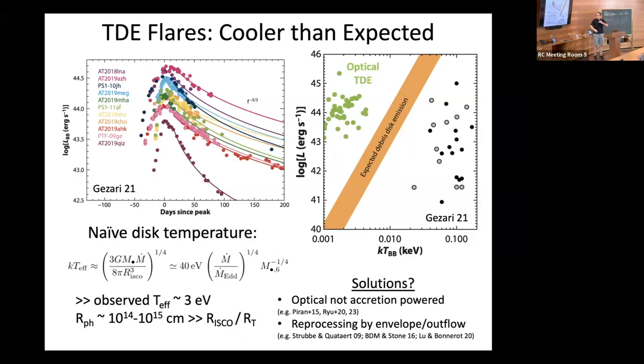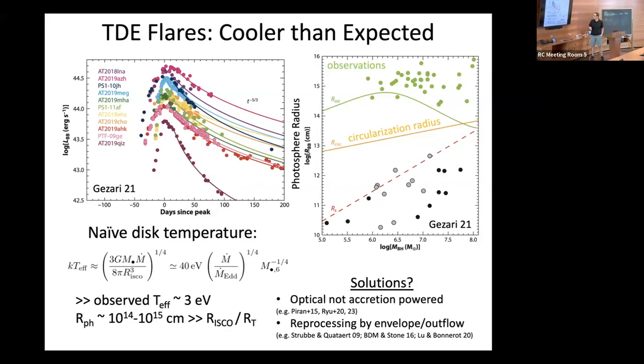One of the mysteries of TDEs is that we naively expected this matter would come back, form a compact accretion disk, and most of the emission occurs at the temperature of the innermost stable circular orbit, typically in the far UV or soft x-rays. But when we started observing optical UV TDE flares, they were quite bright in the optical and UV. What was unexpected is the effective temperatures were substantially less than what you'd nightly guess for a thin disk. The photosphere radii were substantially larger than either the tidal radius or the ISCO of the black hole.